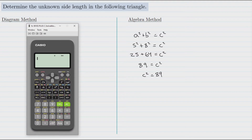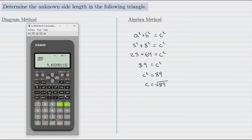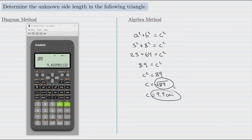If I call up my calculator, I'm going to figure out the square root of 89. Just punch in square root of 89 — be aware on your calculator you might have to hit 89 first and then square root. That gives us approximately 9.4 if we round to one decimal place. So c equals about 9.4 centimeters. If we want the exact answer we have square root of 89, or approximately 9.4 in decimal form. That's using the algebra method.